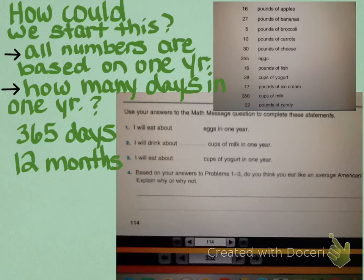So when we look at these questions that you will be answering in class, how could we start this? Now remember, all the numbers are based on one year. How many days are in one year? Well, there's 365 days. Or we could look at it in months and try to figure it out that way. So how would you go about that?